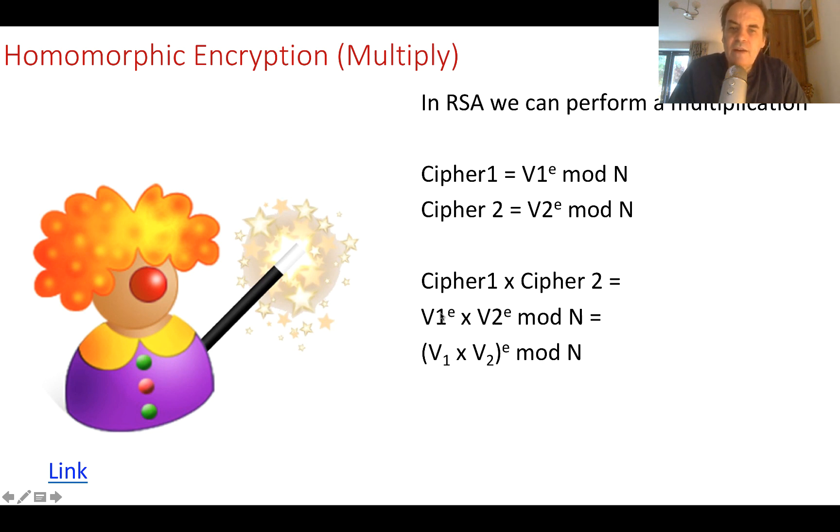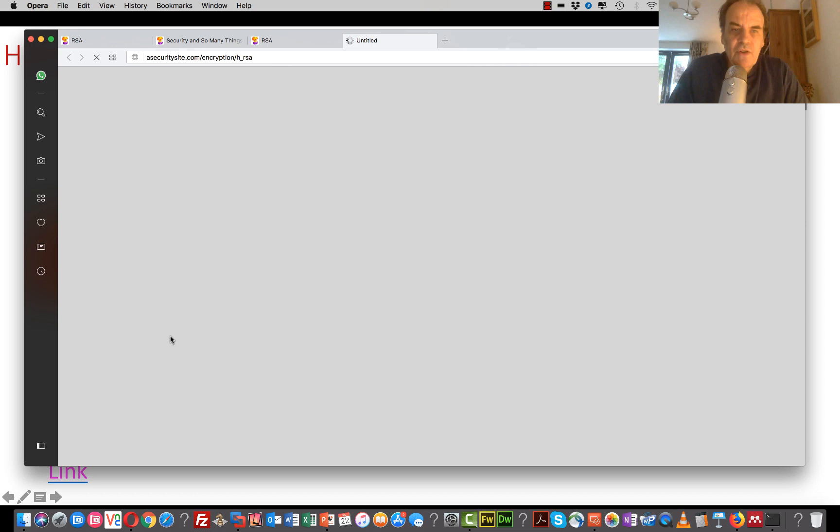But we can bring them together. V1 to the power of E times V2 to the power of E. So that's a bit like 2 to the power of 3 times 3 to the power of 3. So we can group together, and that becomes V1 times V2 to the power of E mod N. So let's give that a try, and see if we can get it to work.